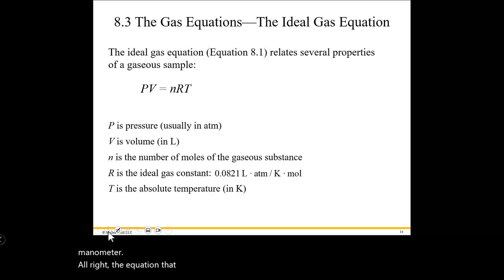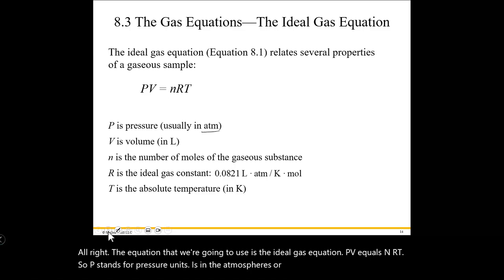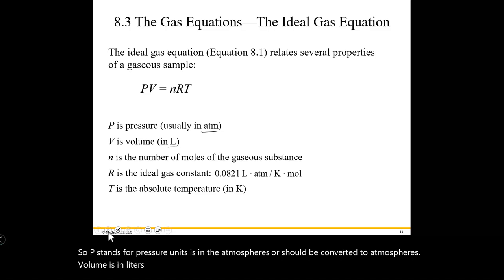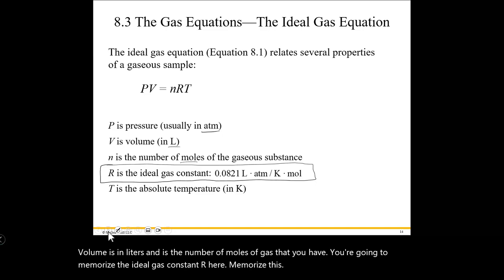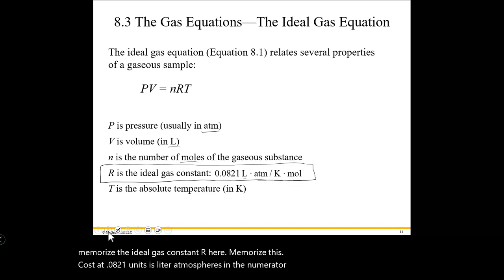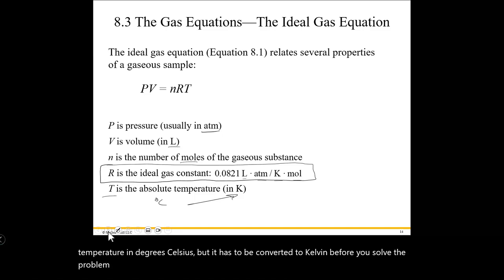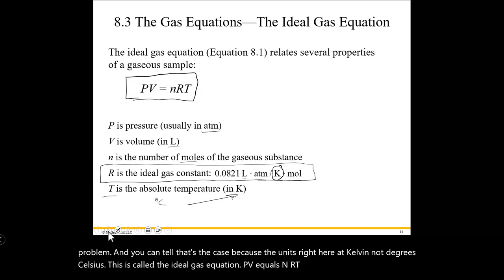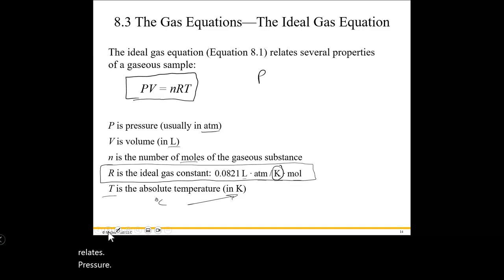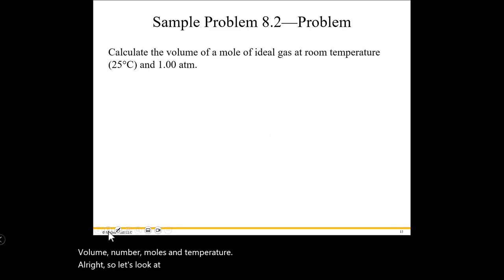The equation we're going to use is the ideal gas equation: PV = nRT. P stands for pressure in atmospheres. V is volume in liters. N is the number of moles of gas. R is the ideal gas constant — memorize this: 0.0821 liter·atmospheres per mole·Kelvin. T is temperature, and this is what's most often missed: you might measure in degrees Celsius, but it must be converted to Kelvin before solving. You can tell because the units in R are Kelvin, not degrees Celsius. PV = nRT relates pressure, volume, number of moles, and temperature — you must memorize it.